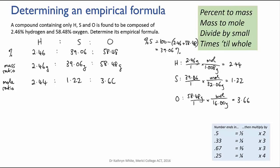And that gives us a ratio of 2.44 to 1.22 to 3.66. Now we divide through by the smallest of those numbers which is 1.22 and that gives us 2 to 1 to 3. So in this case we didn't need to do the final step because the third step already gave us a whole number ratio. And our empirical formula is H2SO3.